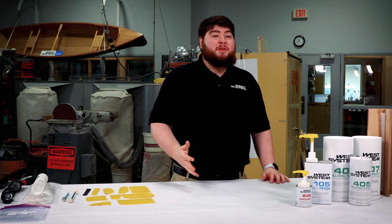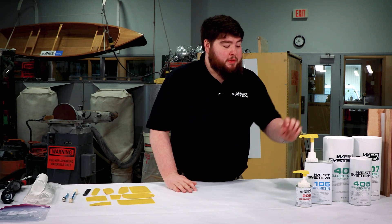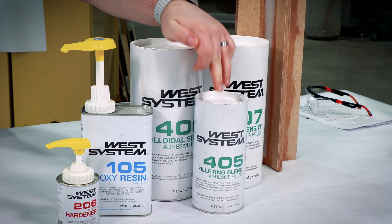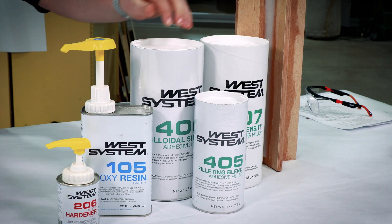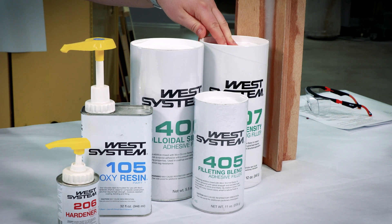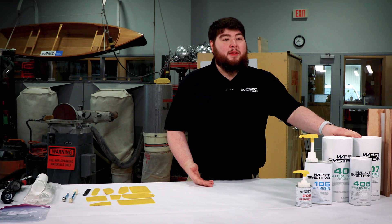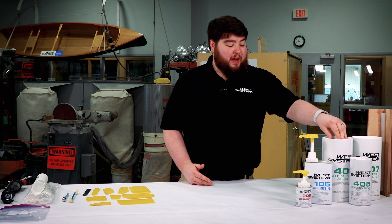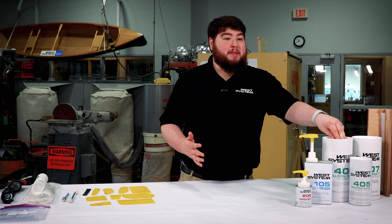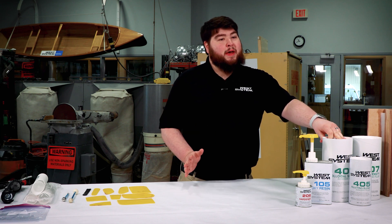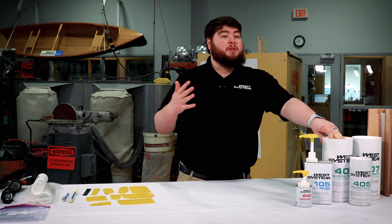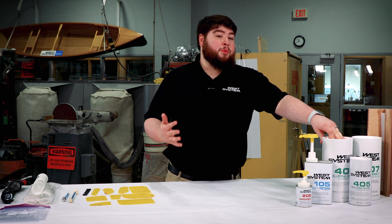For filleting, we recommend using one of three fillers: the 405 Filleting Blend, the 406 Colloidal Silica, or the 407 Low Density Filler. The 407 is a low density filler and the 405 and 406 are both high density fillers. That matters a lot when you're thinking about fillet radius.